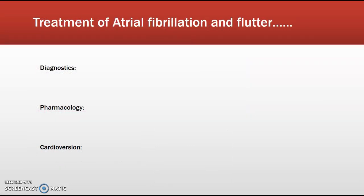Atrial fib is fairly common. Diagnostically, the best test to see if a patient is in atrial fibrillation is a 12-lead EKG. Other diagnostics include listening to heart sounds — you would have an irregular S1 and S2, which is a big clue that your patient is in atrial fib. An echocardiogram can show abnormal wall function of the heart muscle. The diagnostics are fairly straightforward.